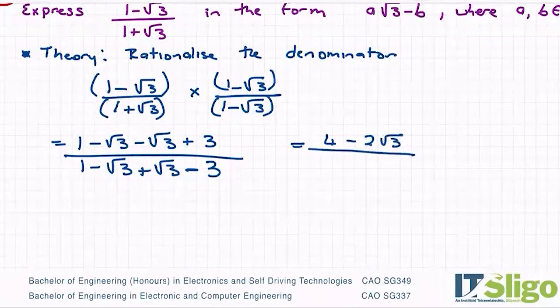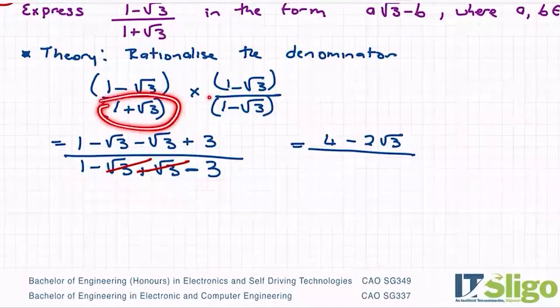And on the bottom, your thirds cancel. That's exactly what you need to happen. This is why we rationalize, this is why we do this, because it gets rid of the thirds and we're left with just rational numbers. When you multiply a number by its opposite sign or its conjugate, it gets rid of this bit in the middle.